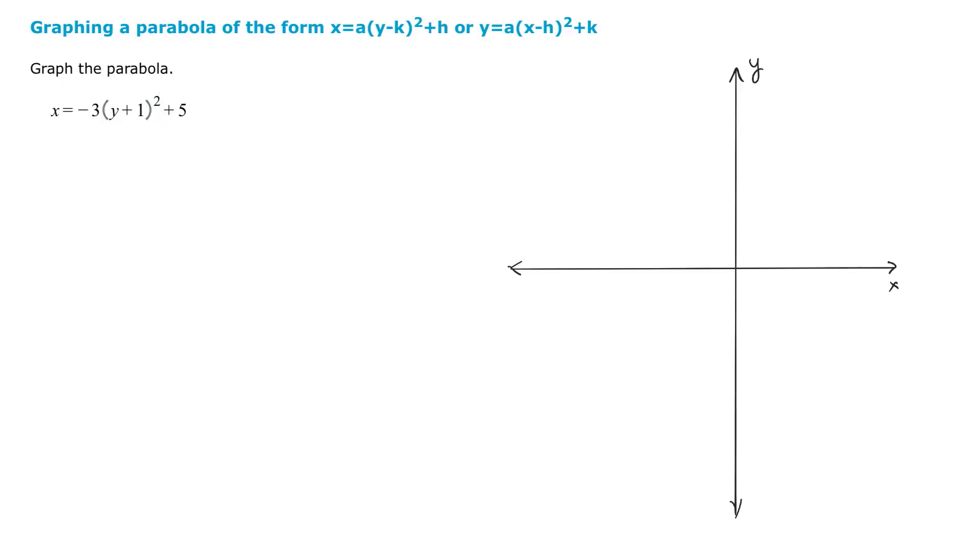Let's graph the parabola. It's x equals negative 3 times the quantity y plus 1 squared plus 5. The first thing you want to do is recognize the form and then identify the vertex.